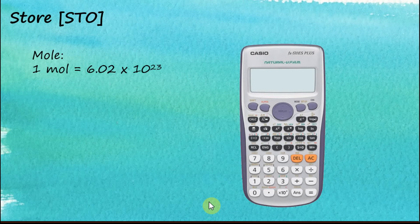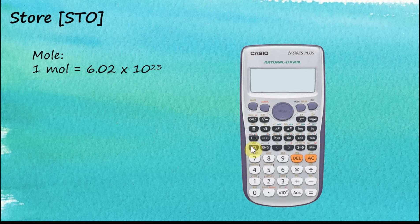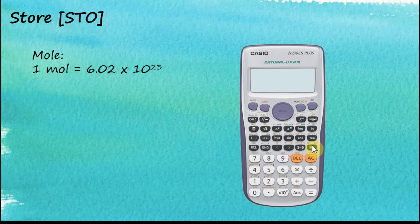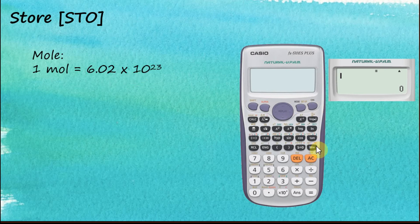Sometimes there are numbers we would like to remember or store and use at a later stage — numbers that are very long and used frequently, so we don't want to key them in one by one every time. We can store them in the calculator. For example, in chemistry, Avogadro's number, 6.02 × 10²³, is used frequently and is quite long. I prefer to store it in the M button. Let's see how to do this.